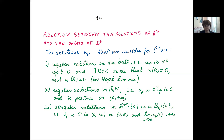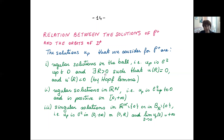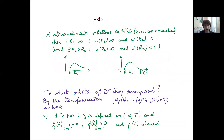Singular solutions, which blow up at the origin, correspond to other orbits; and exterior domain solutions — which vanish at some radius R and are defined either for all r up to plus infinity or only until another radius R_2 — correspond to yet another kind of orbit. Understanding this correspondence is important for the analysis.